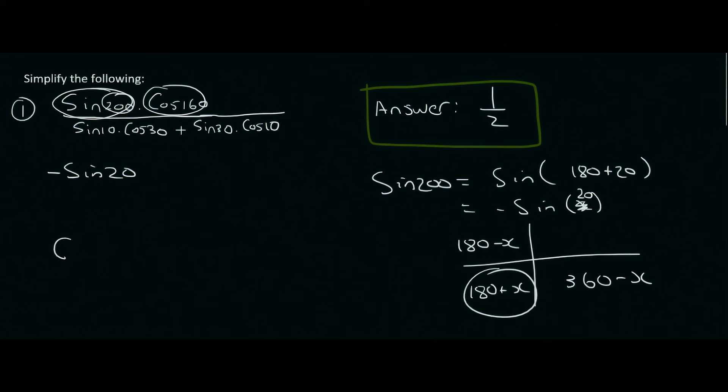Now cos 160, we know that 160 is the same as 180 minus 20. And we know that that's this quadrant over here. So that just becomes the negative of cos 20. Negative because cos is negative in that quadrant.